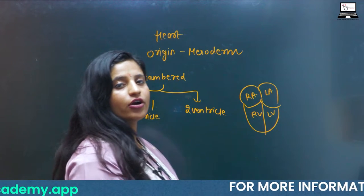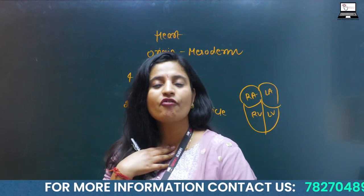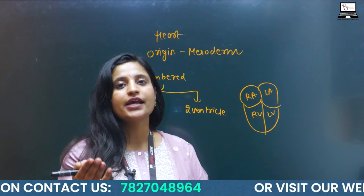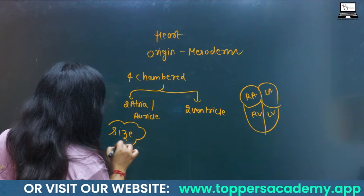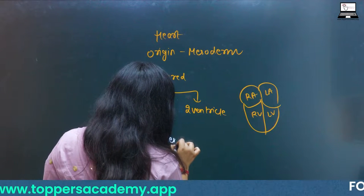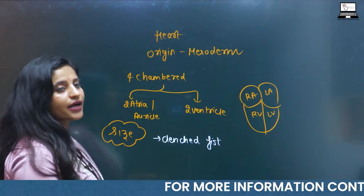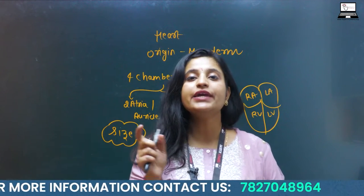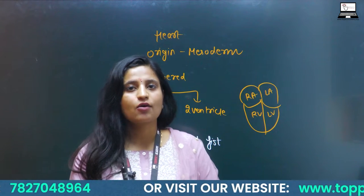What is the size of your heart? The clenched fist — this clenched fist is the size of my heart; the clenched fist of yours is the size of your heart. And where is the heart exactly present in our body? The heart is present between the lungs, and that space is known as the mediastinum space.